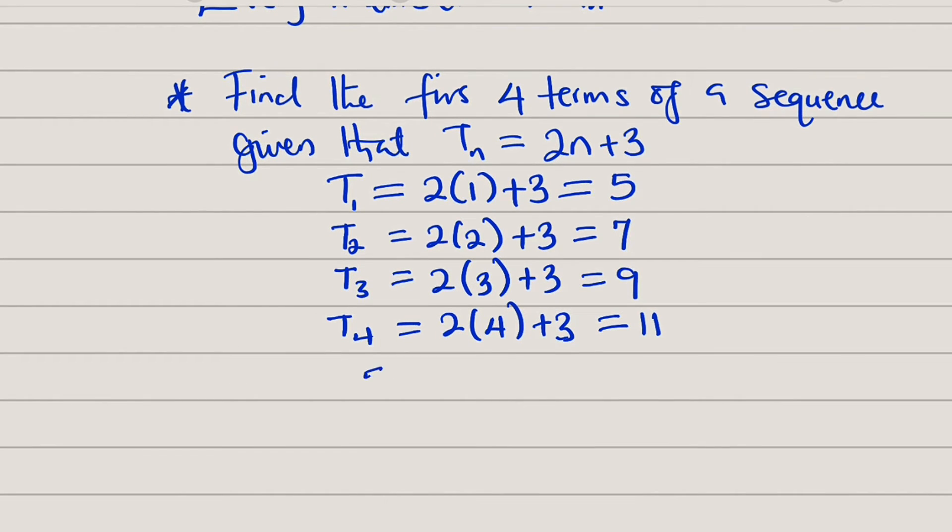The members are 5 separated by comma, 7, 9, and 11. So, now let us observe this sequence carefully.